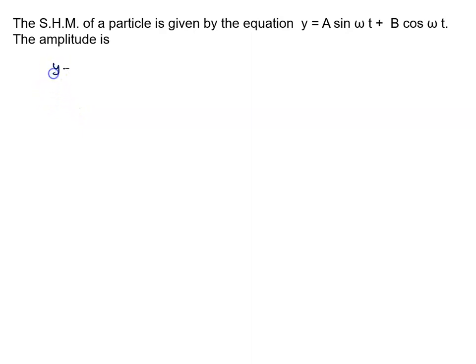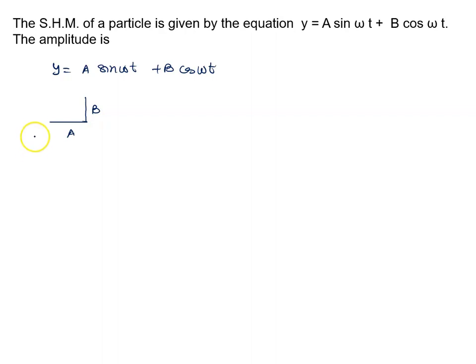The SHM particle is given by y = a sin(ωt) + b cos(ωt). The amplitude is found by multiplying and dividing by the hypotenuse, because π/2 is the difference between a sin(ωt) and b cos(ωt), or b sin(ωt + π/2). Let this angle be α, and the hypotenuse is given by √(a² + b²).